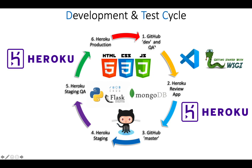Once a team member tests the review application and approves it, our code from GitHub development is merged with GitHub master, which automatically deploys to Heroku staging. We run integration tests - with four developers each working on create, read, update, delete individually, each tested in the Heroku review app, then all included in the staging deployment for full integration and system testing. Once all tests pass, we promote to production. That means we have local development environments per developer, a Heroku review application for unit testing, staging for integration testing, and production.